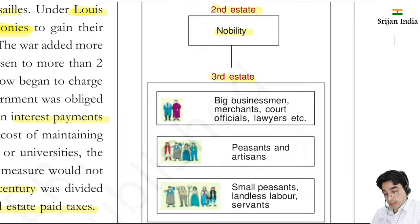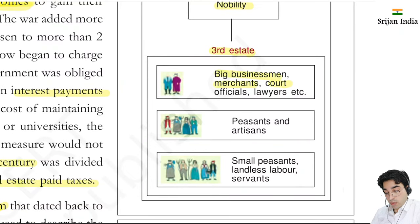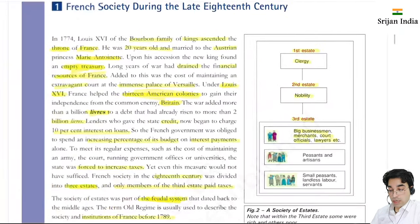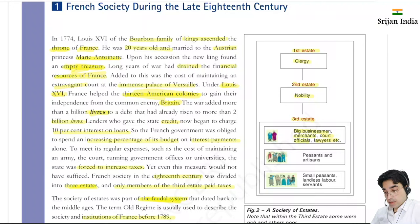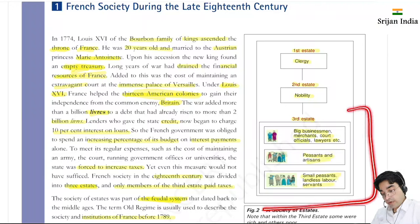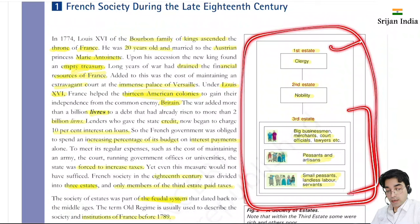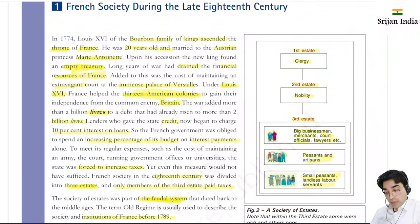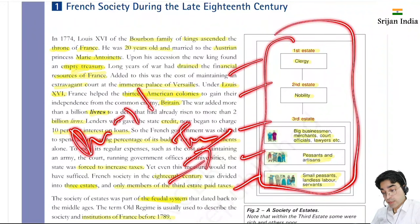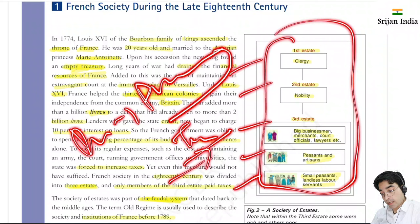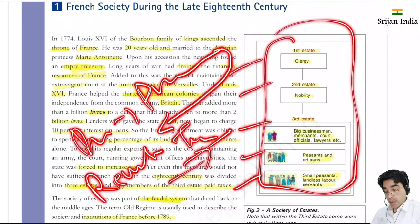The first estate was the clergy, the second estate was the nobility, and the third estate included big businessmen, merchants, court officials, lawyers, peasants, artisans, small peasants, landless laborers, and servants. The first and second estate members had privileges by birth - the most important being exemption from paying taxes to the state. The nobles also enjoyed feudal privileges - they extracted feudal dues from the peasants.